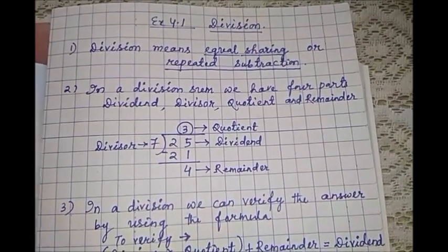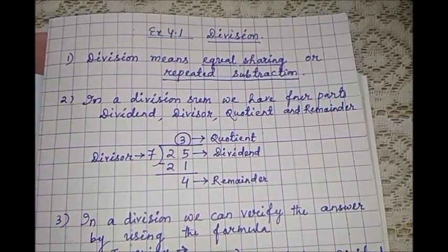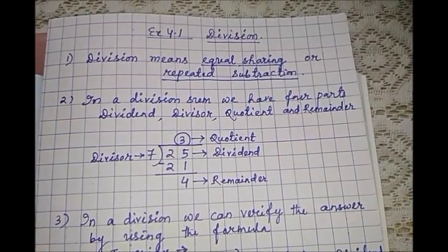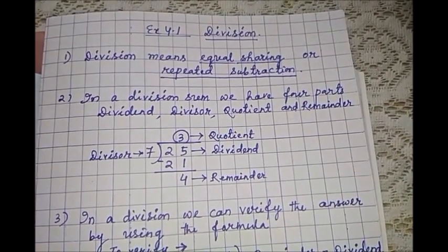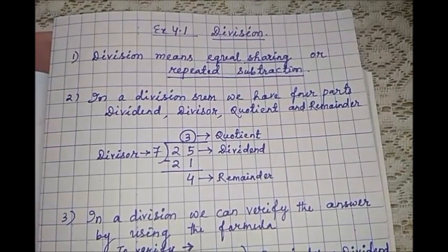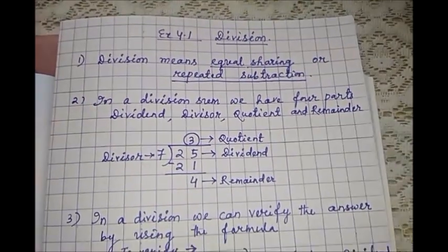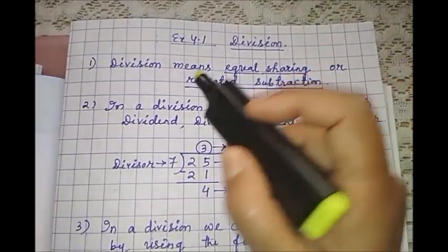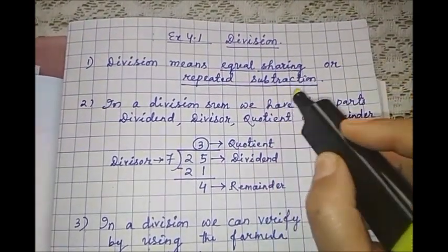That means when you share anything, suppose you have four chocolates and you have to share with your brother, then what you will do? You will divide the chocolates equally. Then how many chocolates will you get? Two chocolates you will get and two chocolates your brother will get. So division means equal sharing or repeated subtraction.